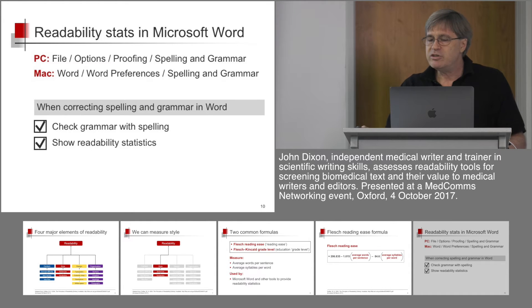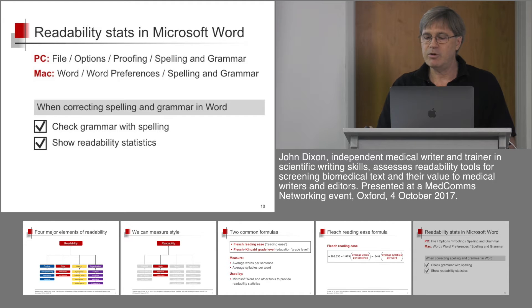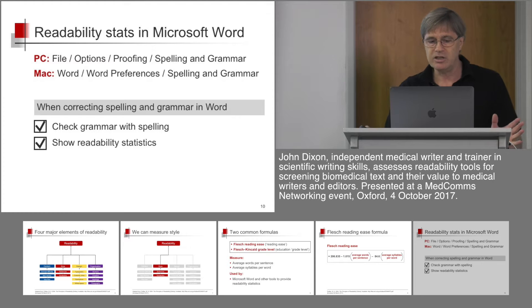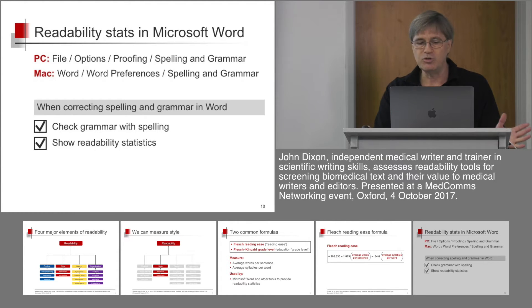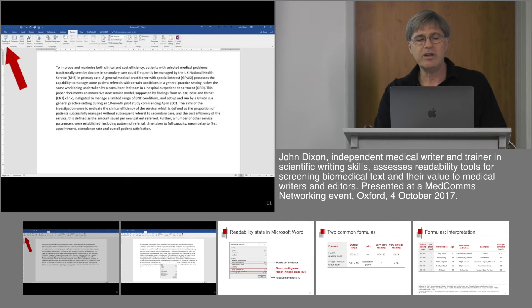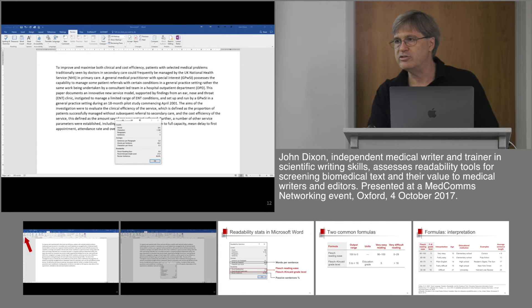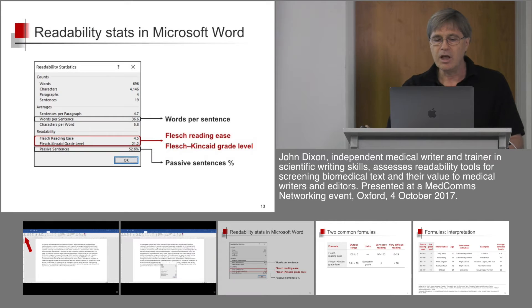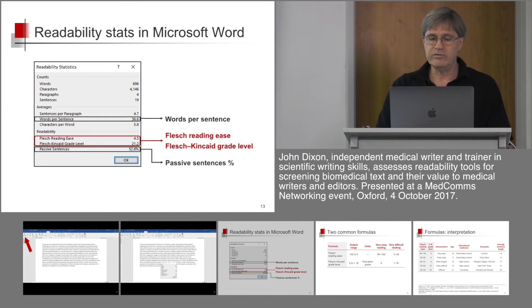To show readability statistics for a document in Microsoft Word, you need to make sure that in the spelling and grammar options section, the 'show readability statistics' box is checked. Everybody has the 'check grammar and spelling' box, but not the other box which shows the readability statistics. So when you perform a spelling and grammar check on a document in Word, at the end of the check you'll see a box called readability statistics. Within this box, you'll be told the average number of words per sentence and the results of the Reading Ease and Grade Level formulas.